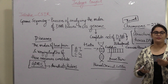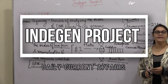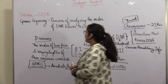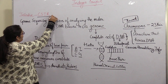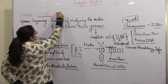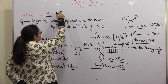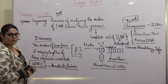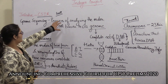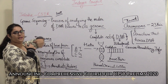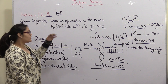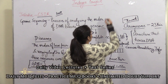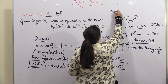Hello everyone. The topic we are going to discuss today is the Indigen project. The Indigen project has come into news because CSIR has announced that they have done 1008 Indian genome sequencing, completing six months of the exercise. So what is the Indigen project? The Indigen project is India's equivalent of the Human Genome Project.